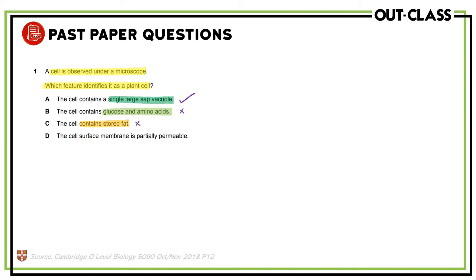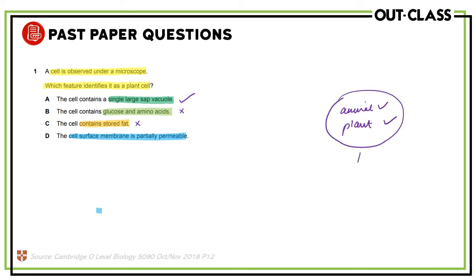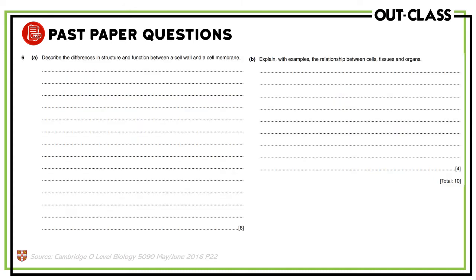Option C says the cell contains stored fat — but stored fat is also found in animal cells, so it is not unique to a plant cell. Option D says the cell surface membrane is partially permeable — but the cell membrane is found in both animal and plant cells, and it is selectively permeable in both of them, so it is not unique to plant cells. The answer is A: the single large sap vacuole is found only in plant cells and not in animal cells.